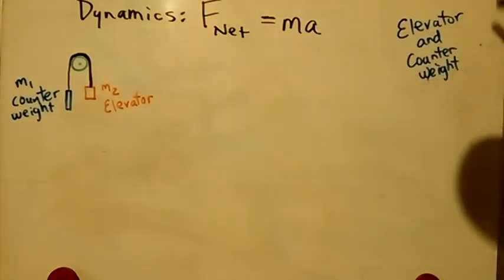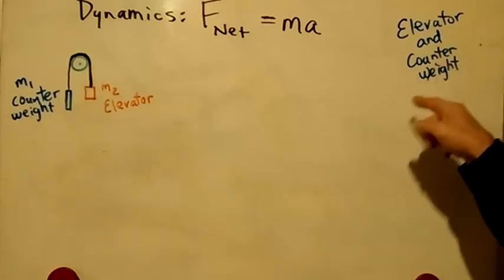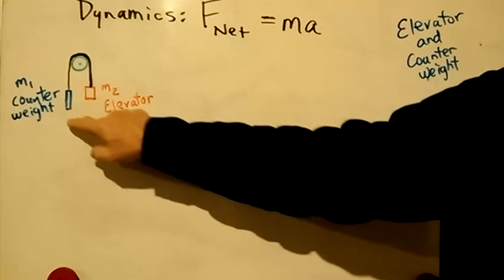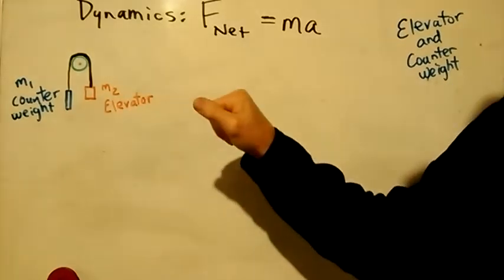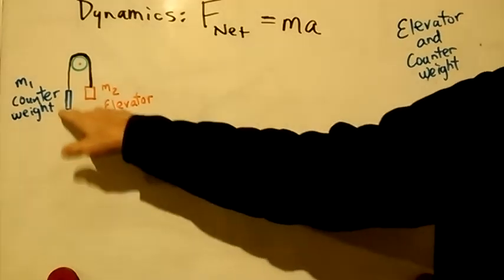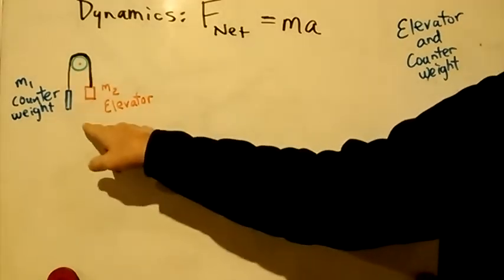And in this example today we're looking at the elevator counterweight. The elevator counterweight system is in just about every major high building in the Western world, and it consists of a counterweight on one side, elevator on the other side.